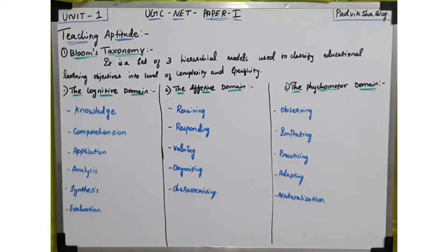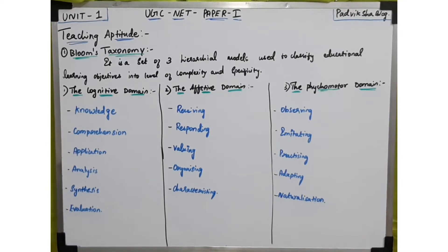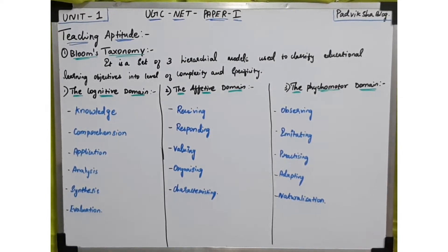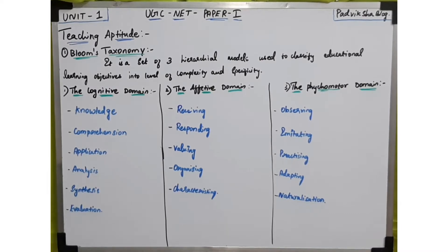Hello guys, welcome to Padhveksha. In our last videos on nature of teaching and objectives of teaching, we discussed two types of objectives of teaching. The first type is Bloom's Taxonomy. Bloom's Taxonomy is a set of three hierarchical models used to classify educational learning objectives into levels of complexity and specificity.